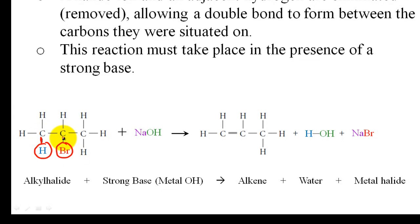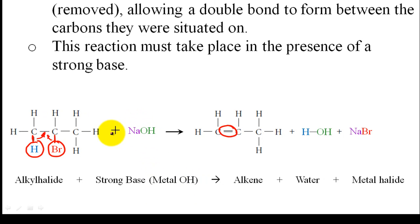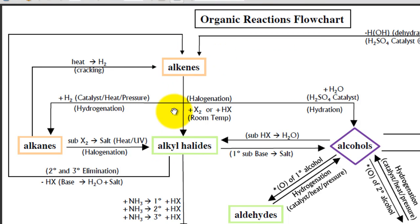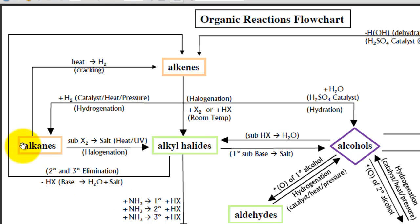The halogen ion and the hydrogen from different carbons are eliminated from the molecule. The extra bonds now available collapse to form a double bond. This reaction must take place in the presence of a strong base, such as sodium hydroxide. The purpose of the strong base is to provide a site for the bromine to bind onto — the halogen bonds to the sodium to create sodium bromide, a metal halide salt, and H plus OH form water.